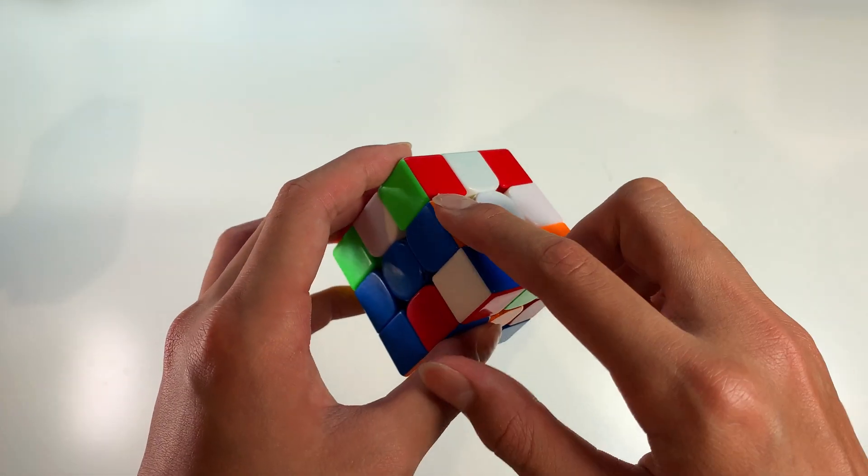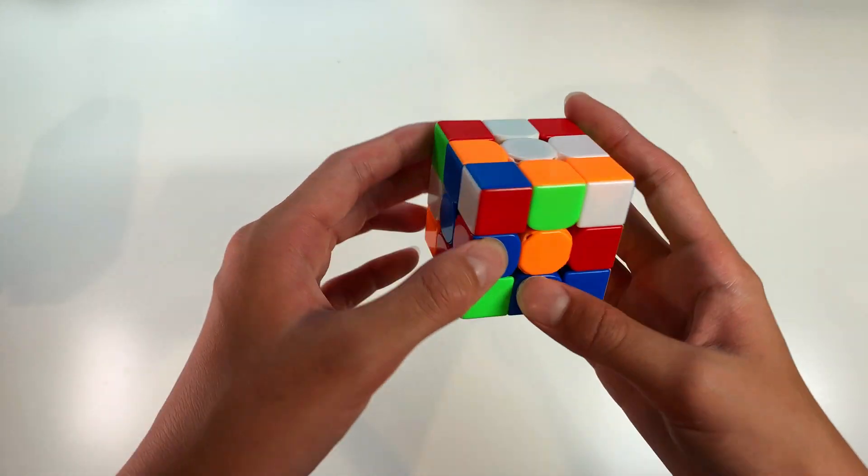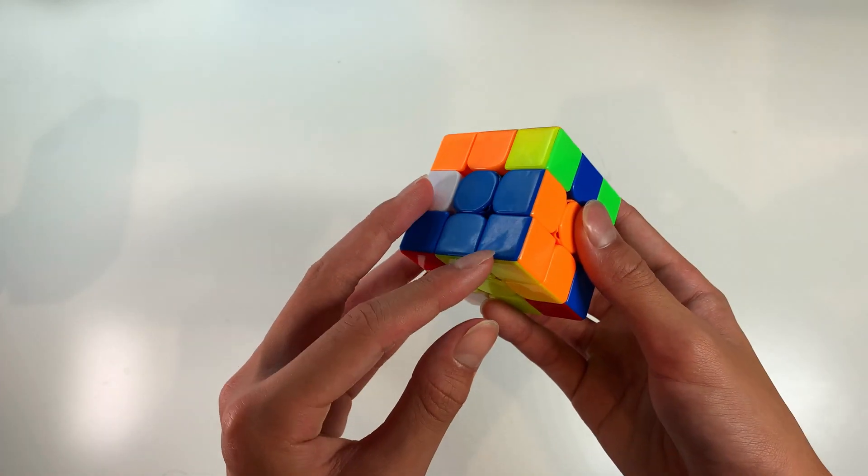Now the exact same thing also works for the edges. So if the corner is solved you can actually do a D to move it away and you can insert this edge into here and then you can restore the cross and that will solve this pair.